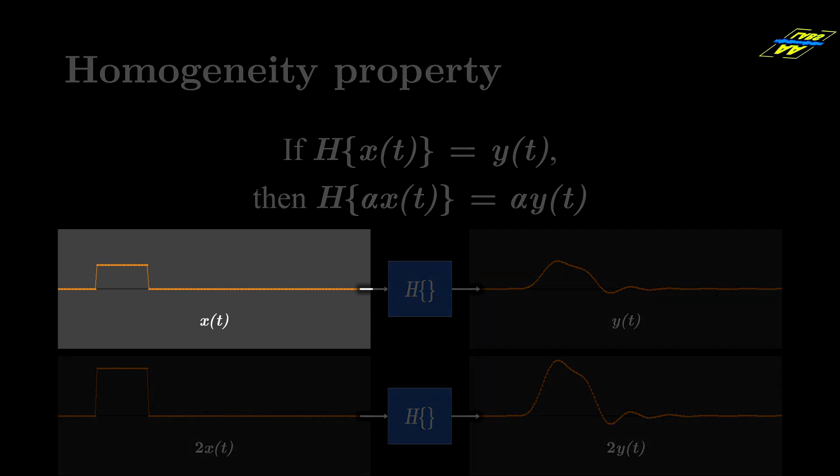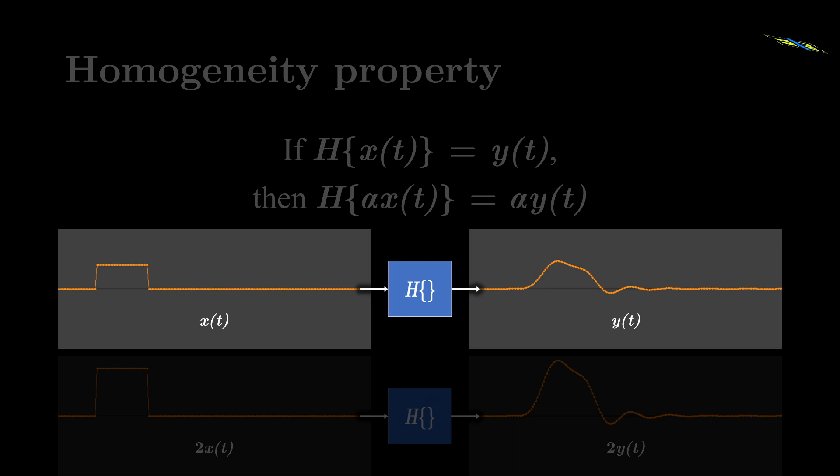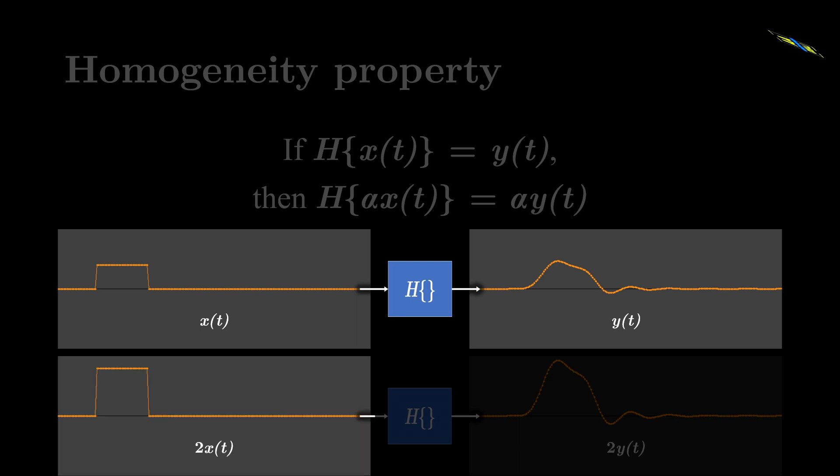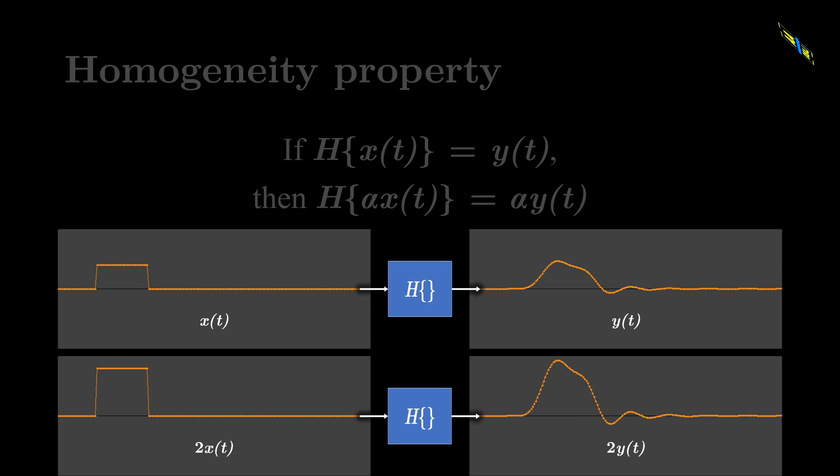For example, when a pulse signal is input into a linear low-pass filter, which preserves low-frequency components while attenuating high-frequency components, this output is produced. When we double the amplitude of the input signal, the output signal also doubles in amplitude, remaining otherwise unchanged.